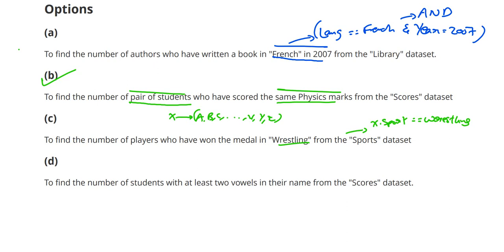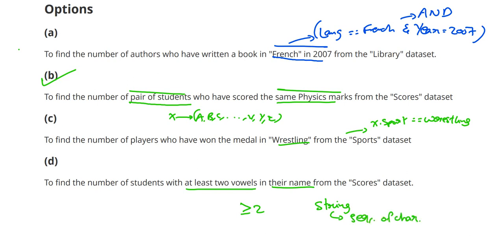Option D: to find the number of students with at least two L's in their name from the scores dataset. This absolutely requires a nested loop, because it requires examining each student's name and checking if it contains at least two L's — that is, a count greater than or equal to 2. The nested loop iterates over the characters present in the name, since a string is a sequence of characters. Therefore, option D is also correct. For Question 1, B and D are the suitable answers.